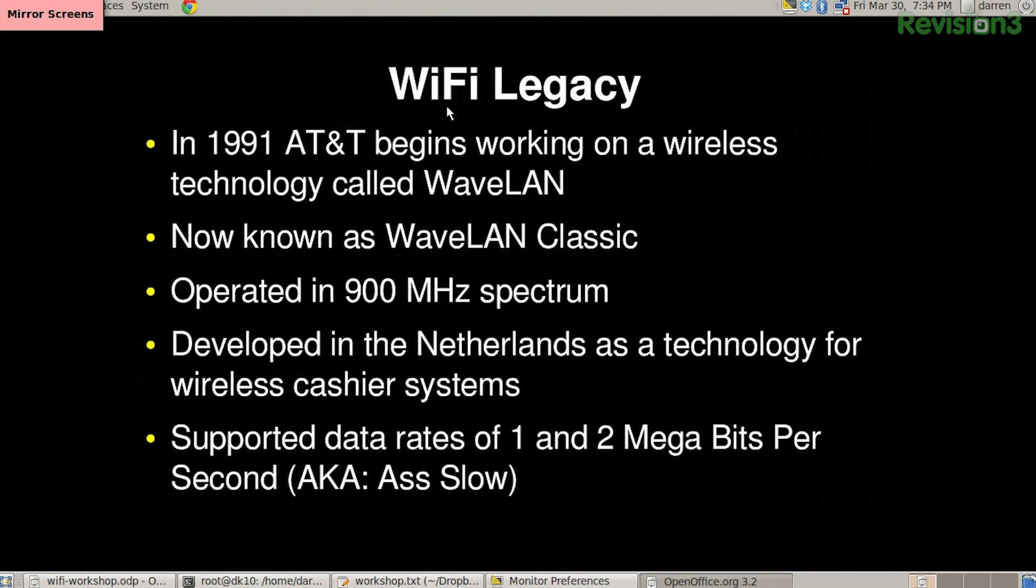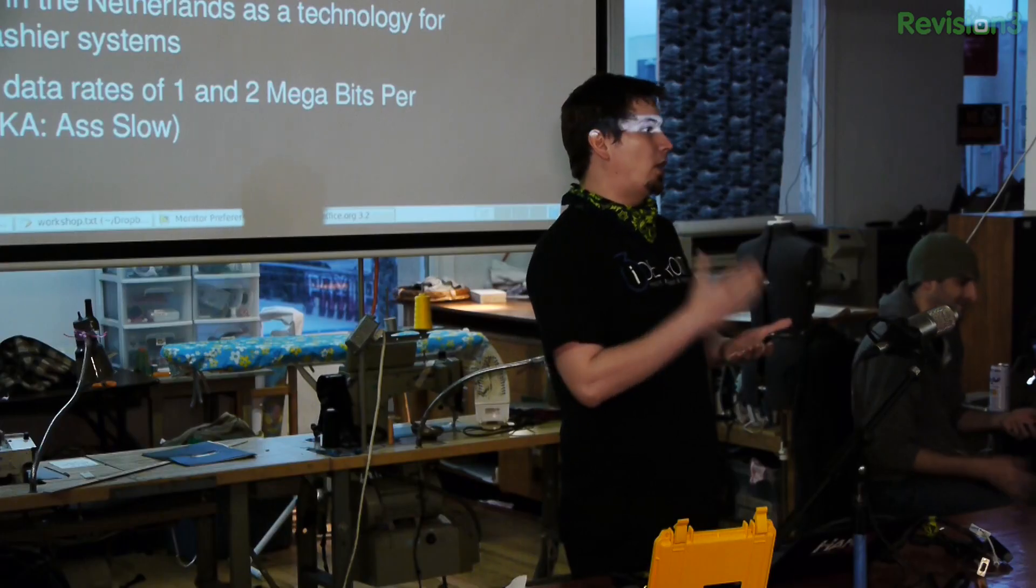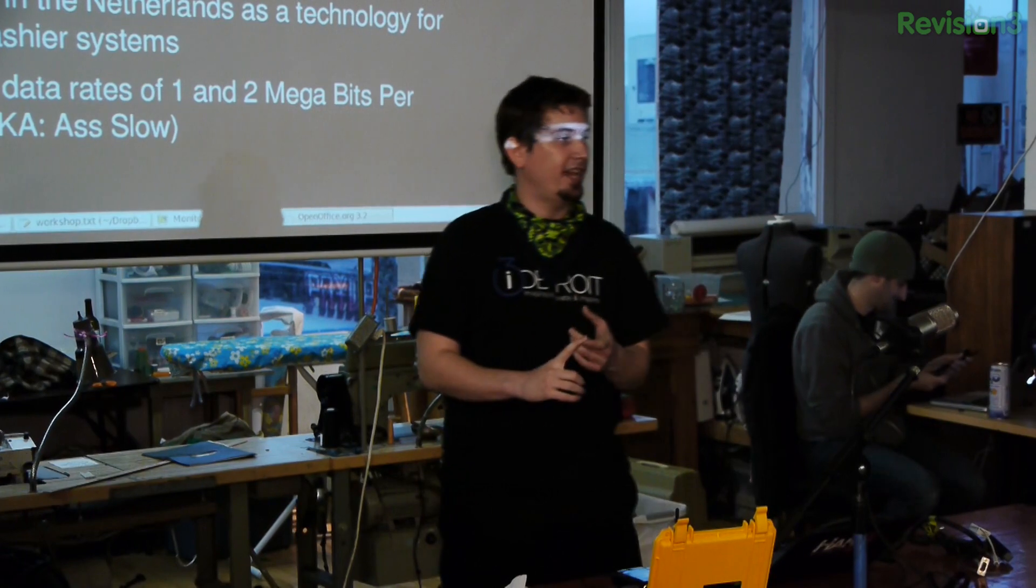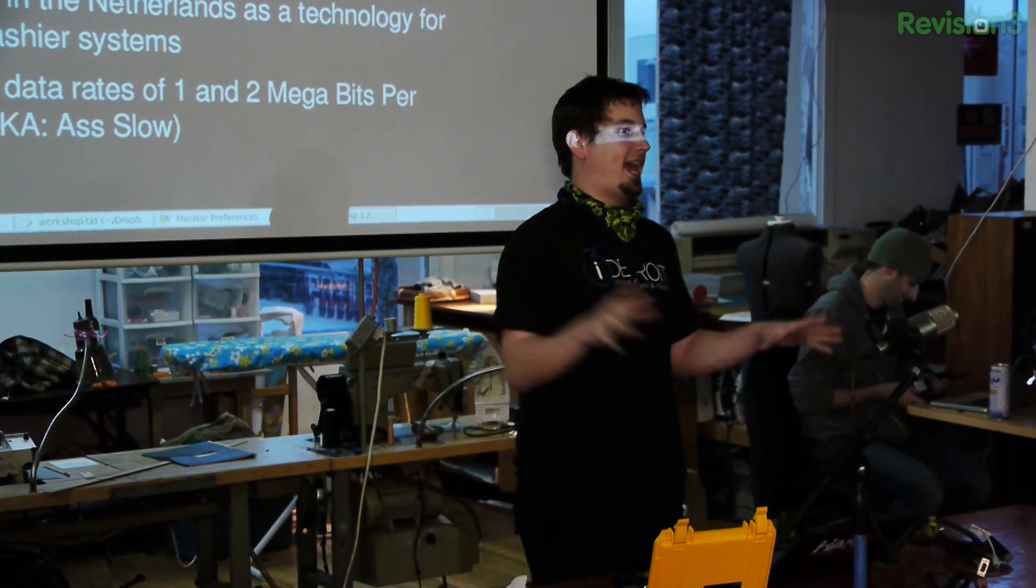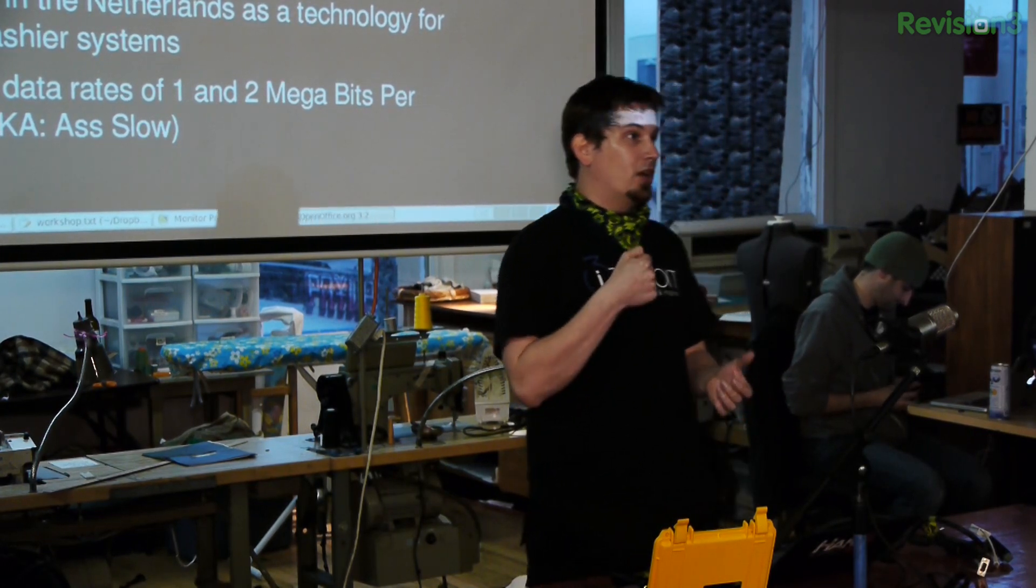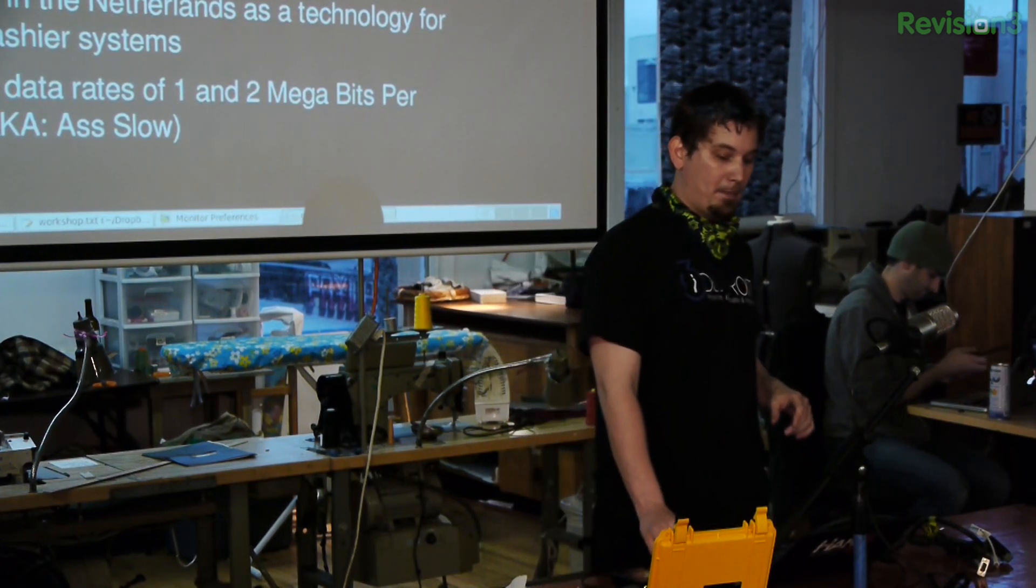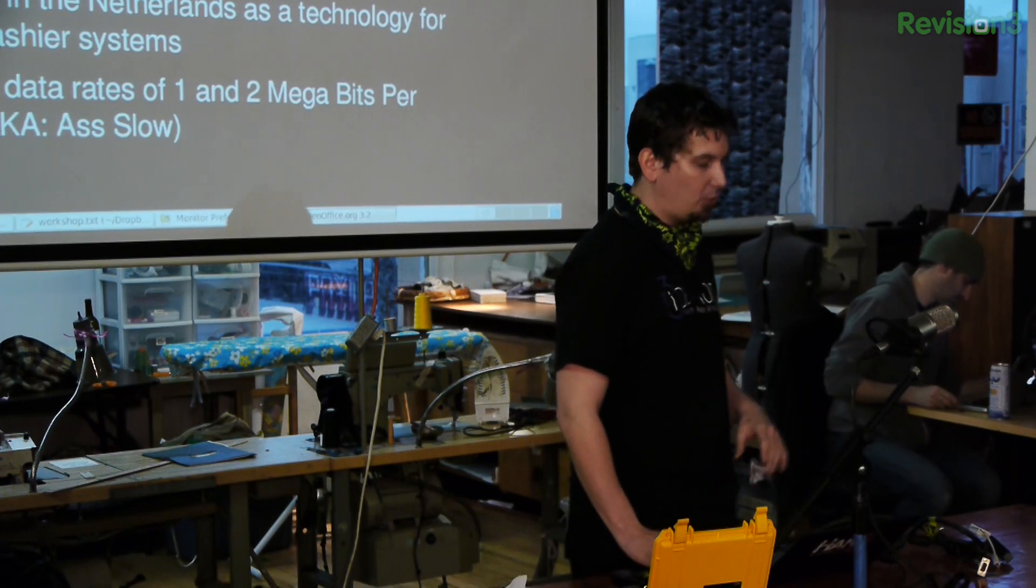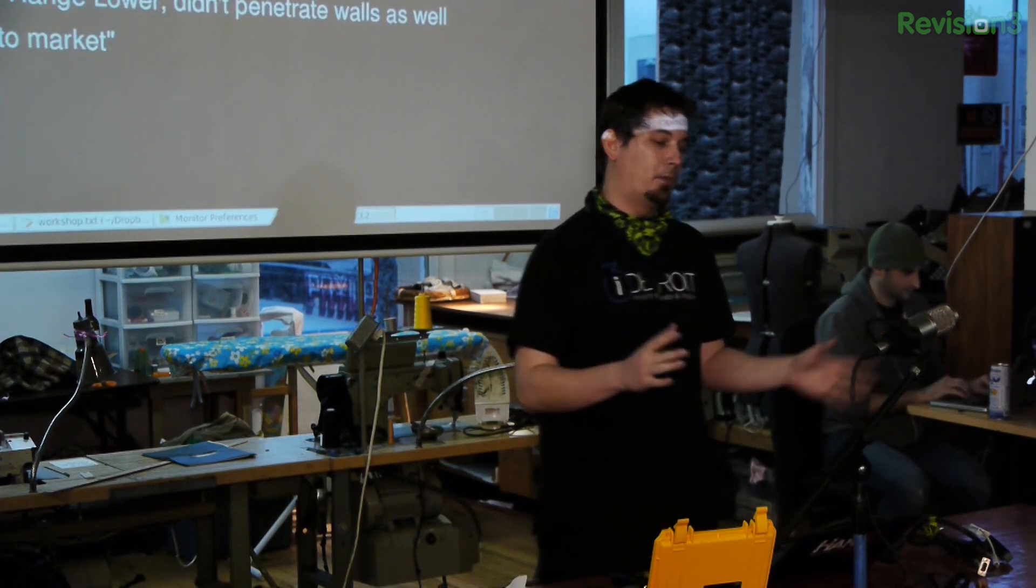We know them as the lettered standards. This one, you've probably never heard of. The Wi-Fi legacy. It turns out this great ubiquitous technology that we take for granted every day actually came from cash registers in Norway. In 1991, AT&T started work on it. They were calling it Waveland, and it's now known as Waveland Classic. Basically, it was a wireless technology that operated under that 900 megahertz spectrum. It was developed in the Netherlands as a technology to wirelessly equip cash registers. It was slow, as in 1 to 2 megabits per second. And that's theoretical maximum. We're not even getting into the overhead of the protocol.